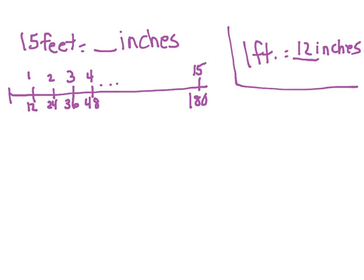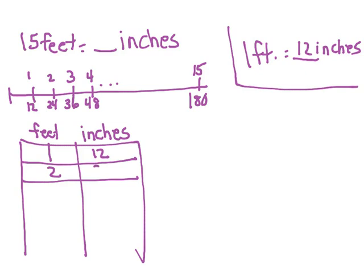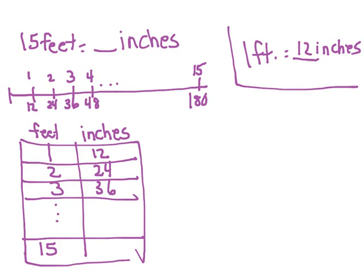You could also make a table with two columns. At the top of one you have feet, at the top of the other you have inches. You could start to build your chart: one foot equals 12 inches, two feet equals 24 inches, three feet equals 36 inches, and so on until you got down to 15 feet, which would equal 180 inches. It would take a lot of time, but you could solve it either way — using a number line or making a chart.